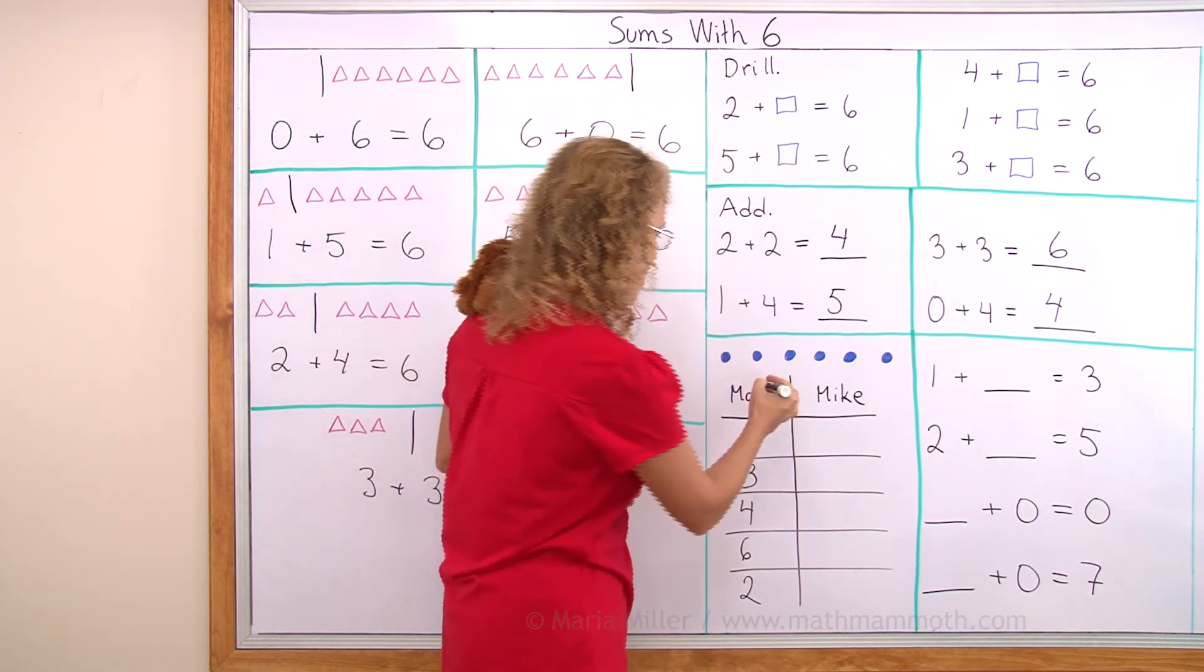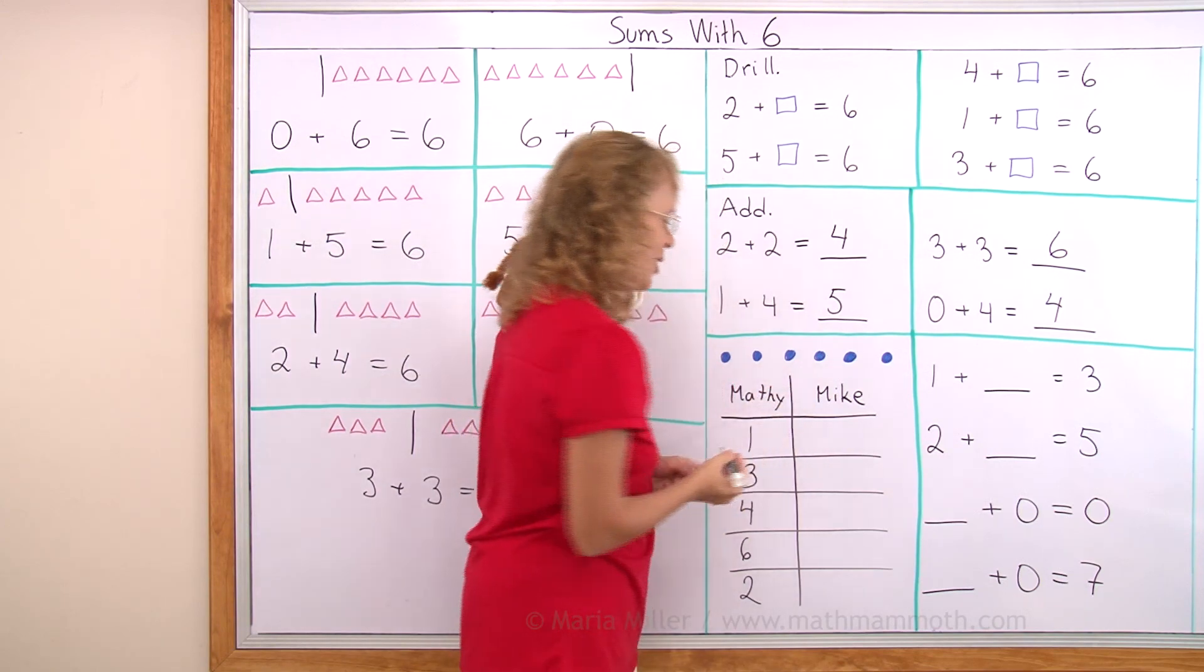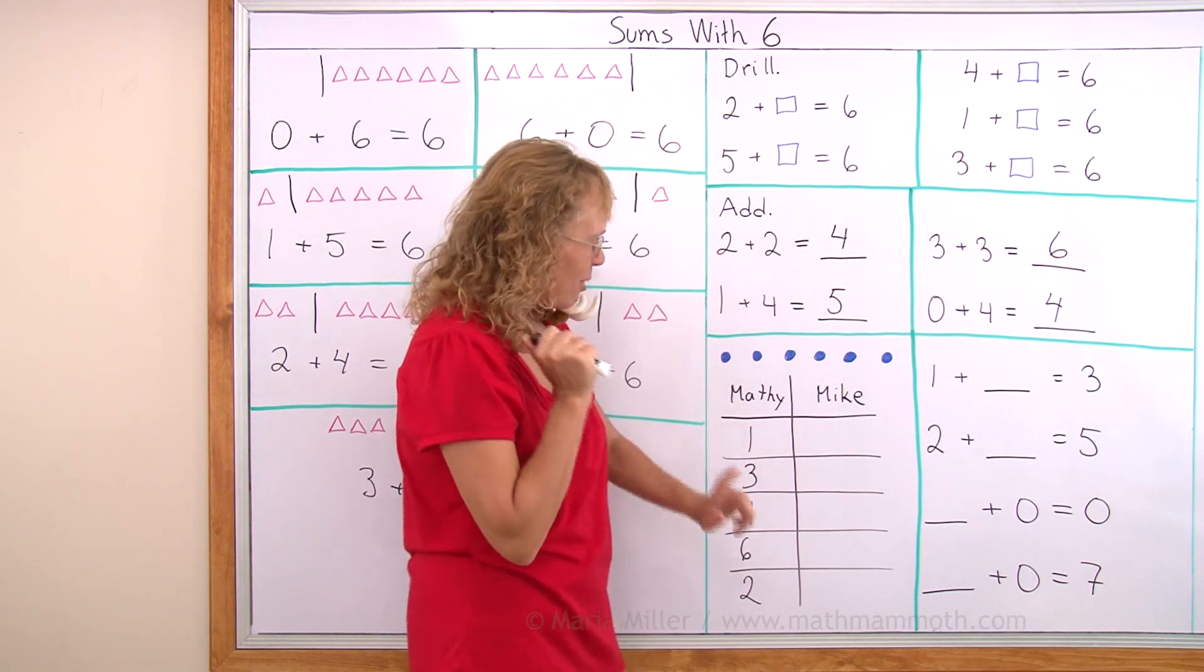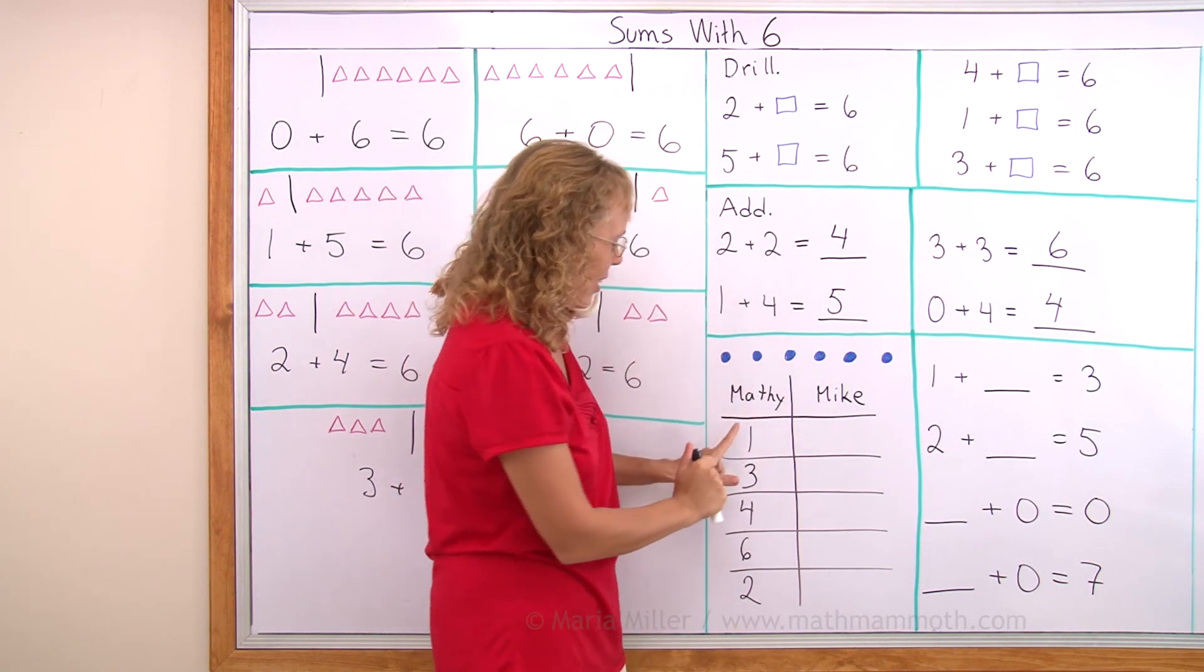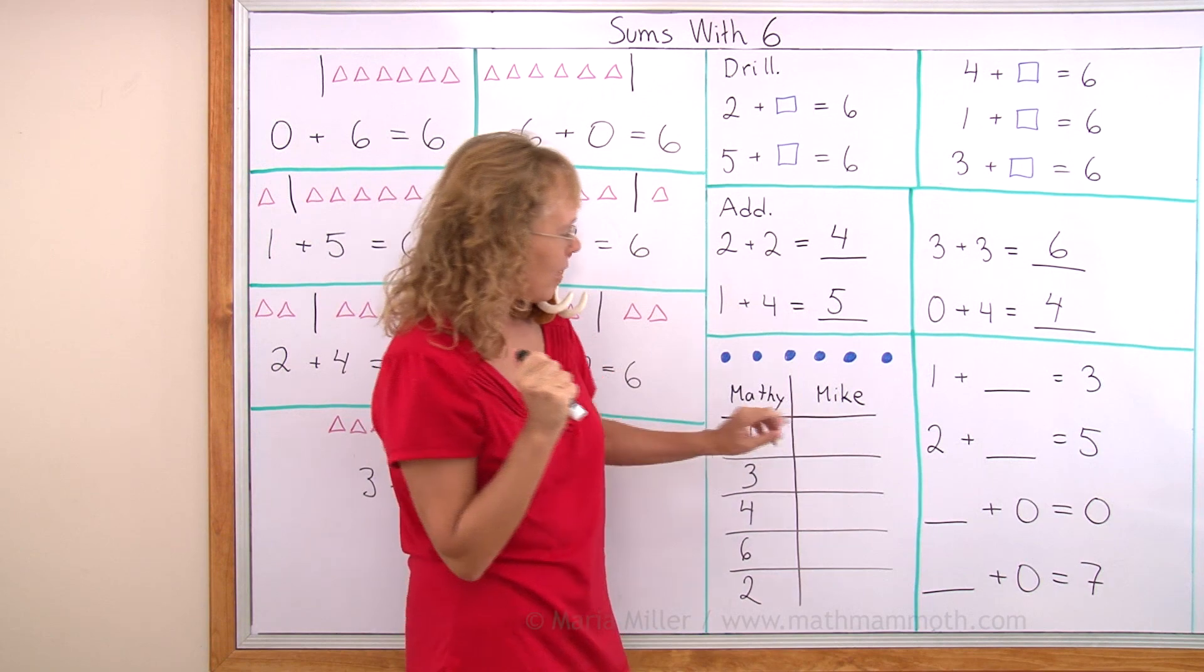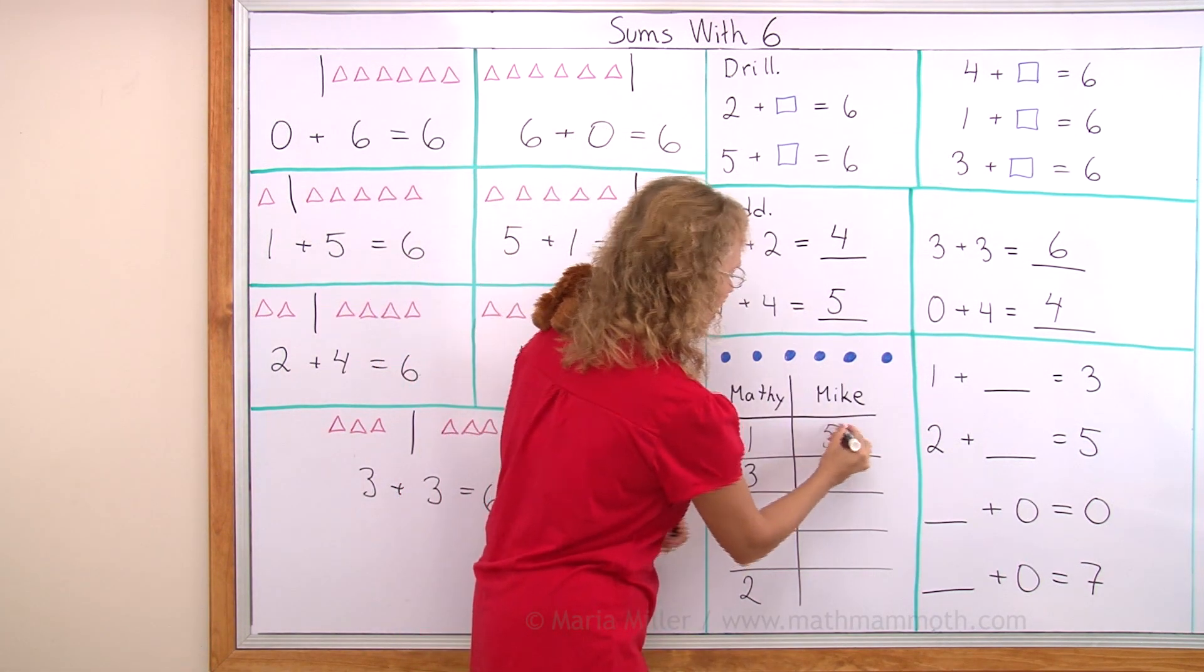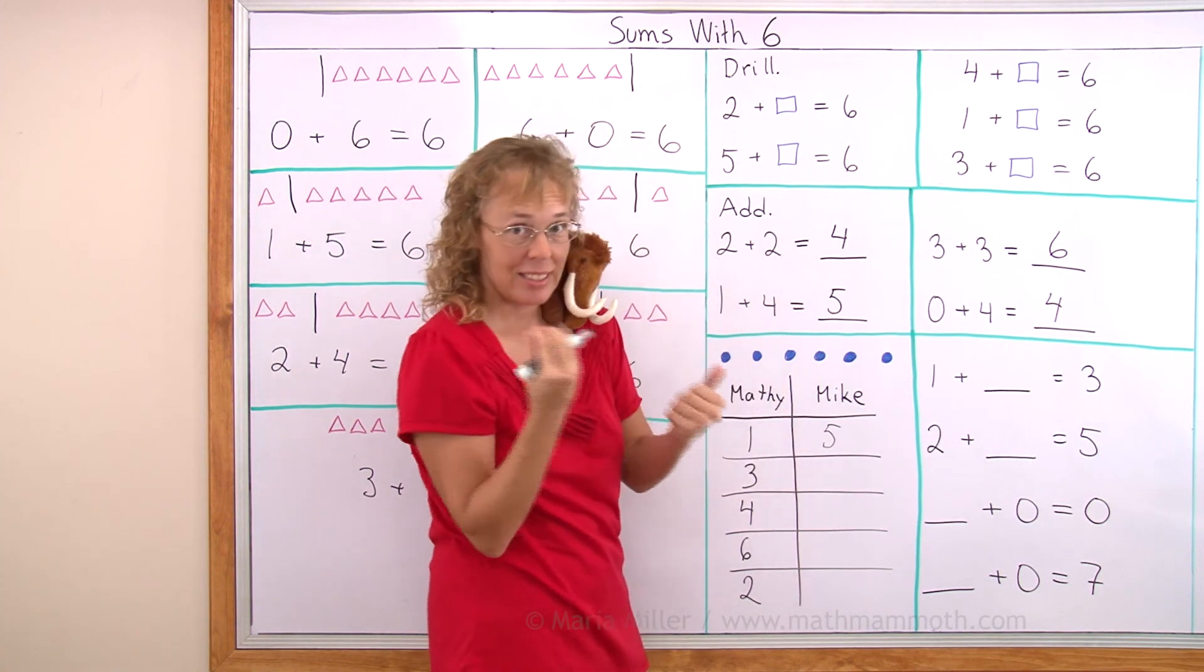You want me to change the Mary? No, Mary? Put Matthew there. I see. Matthew wants to have some blueberries. Matthew and Mike are sharing six blueberries. If Matthew gets one blueberry, then how many would Mike get? If Matthew gets this one, then Mike gets five. See? One and five together make six.